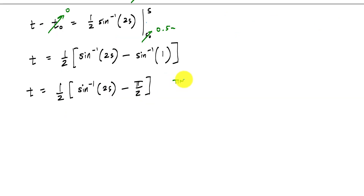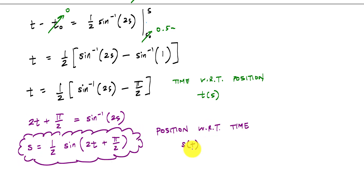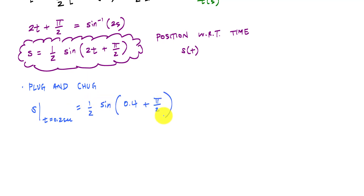Now I have time with respect to position, and I want position with respect to time, so I invert and solve for s in terms of t. This gives me position as a function of time: s of t equals 0.5 times the sine of 2t plus pi over 2. Plugging in t equals 0.2 seconds gives a position of 0.461 meters — that's the answer to Part B.